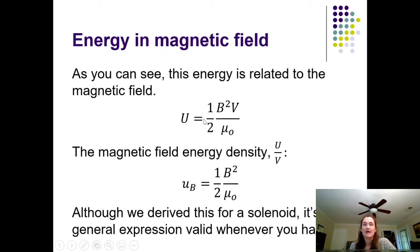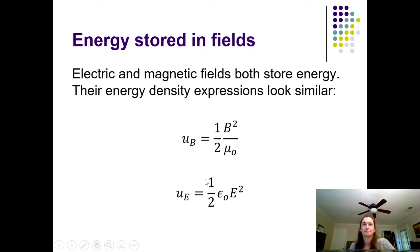So then, the energy stored in a solenoid can be written as one-half B squared V over mu naught. Basically, what we're saying is that the energy stored is related to the magnetic field squared. Now, if you wanted the magnetic field energy density, that would be the energy divided by the volume. So if we do that to both sides of this equation, then we end up with the magnetic field energy density, which is little u sub B, and that's one-half B squared over mu naught. Although we derive this for a very specific application, specifically a solenoid, it's a general expression that's valid whenever you have a magnetic field. The magnetic field energy density will always be equal to one-half B squared over mu naught.